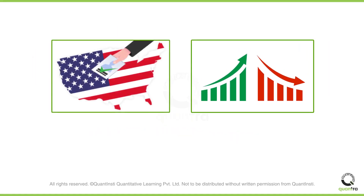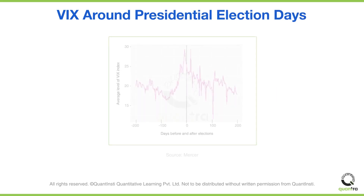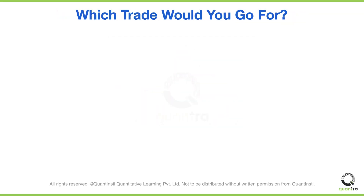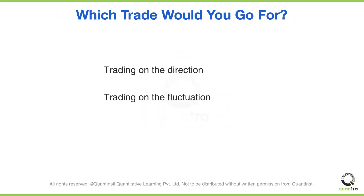Let's revisit that scenario again. It was noted that the direction could be anything, but the event would cause a strong move. This is not just based on a feeling, it's backed by past data. You can see on the screen that prior to an election specifically, volatility tends to spike and then eventually cools off. So, with that information, which trade would you go for — trading on the direction, or the degree of fluctuation?